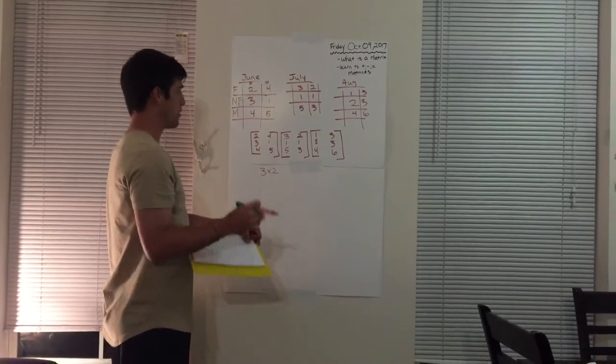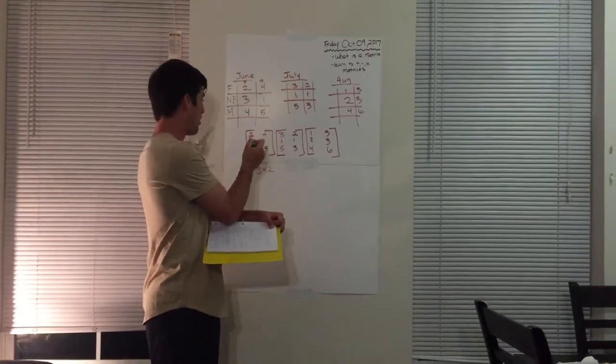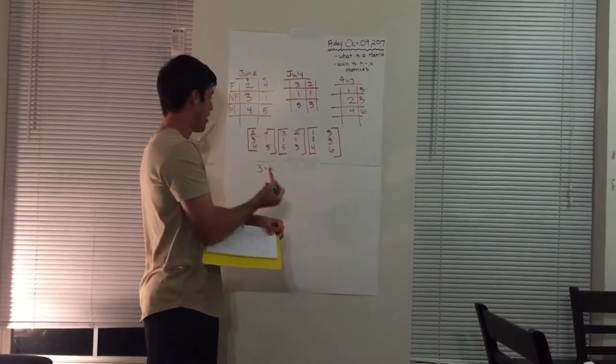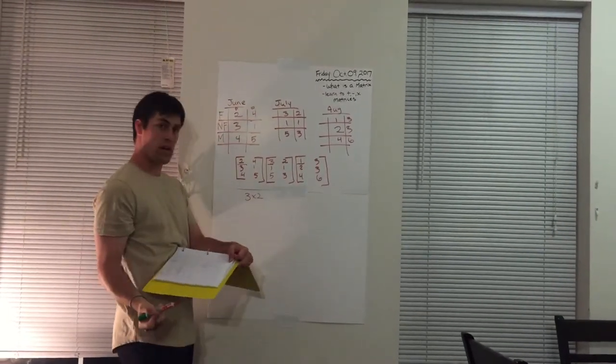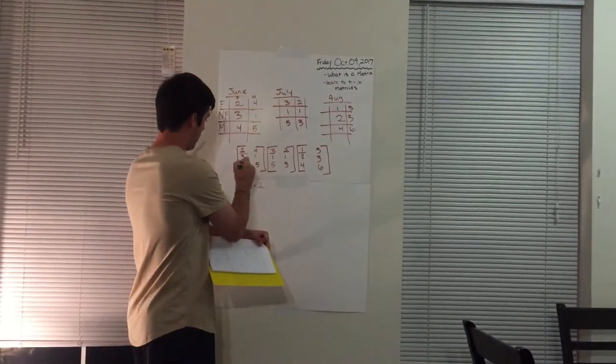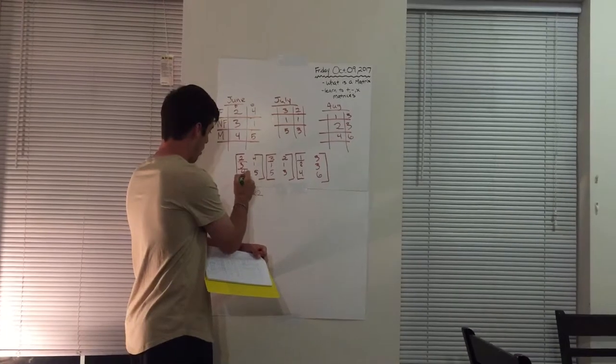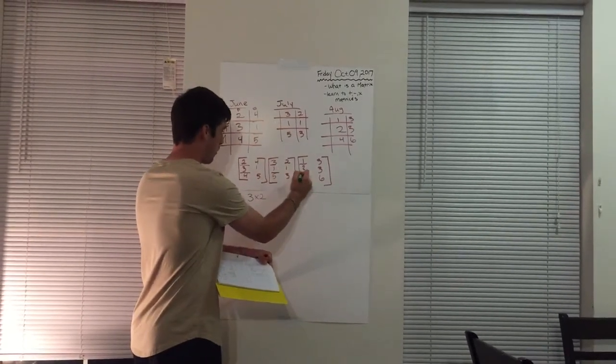So when you're adding them together, you want to make sure you take the first number right here of each matrix and that's what you add together. Once you get all that done, then you move on to the next row and so on and so forth.